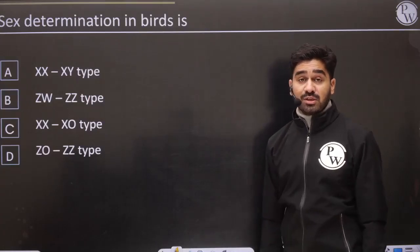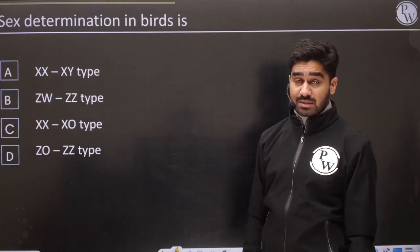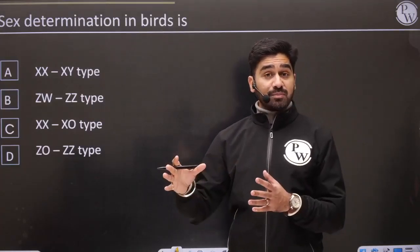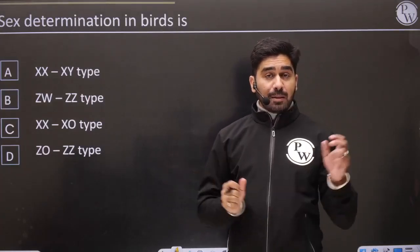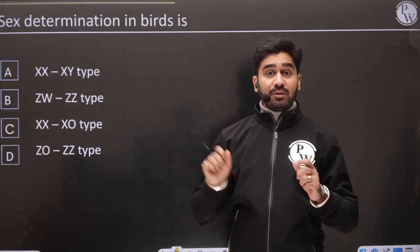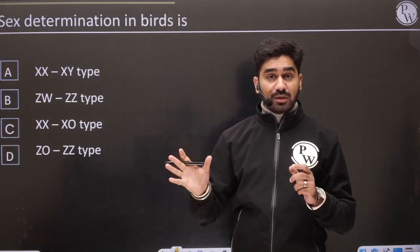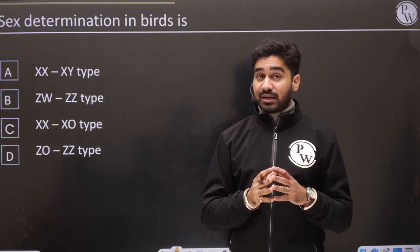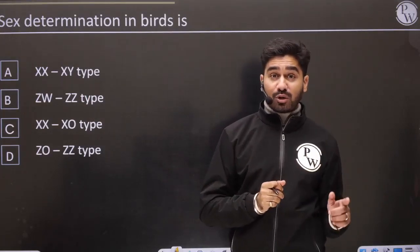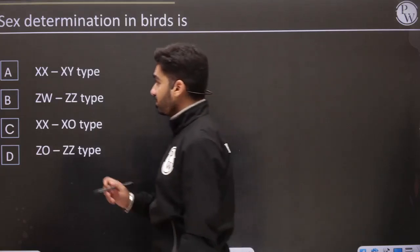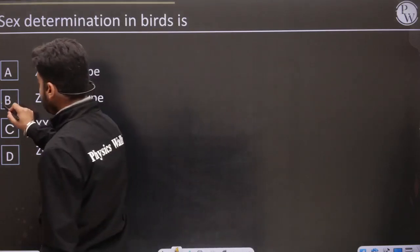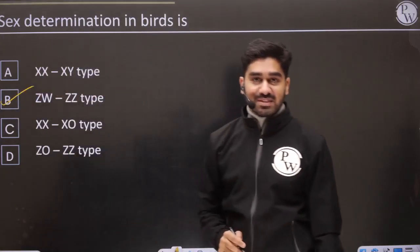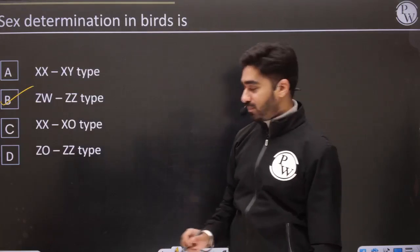Sex determination in birds — we studied variety of sex determination: male heterogamety and female heterogamety. Birds and fishes fall under female heterogamety. Within that, the type is ZW and ZZ.